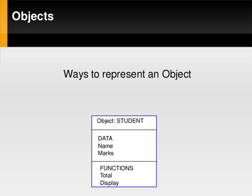Here we have taken an example where the object name is student. The data for the student is student name and student marks. The functions of the student are to calculate the total marks of the student and display the student marks. This is one example of an object.